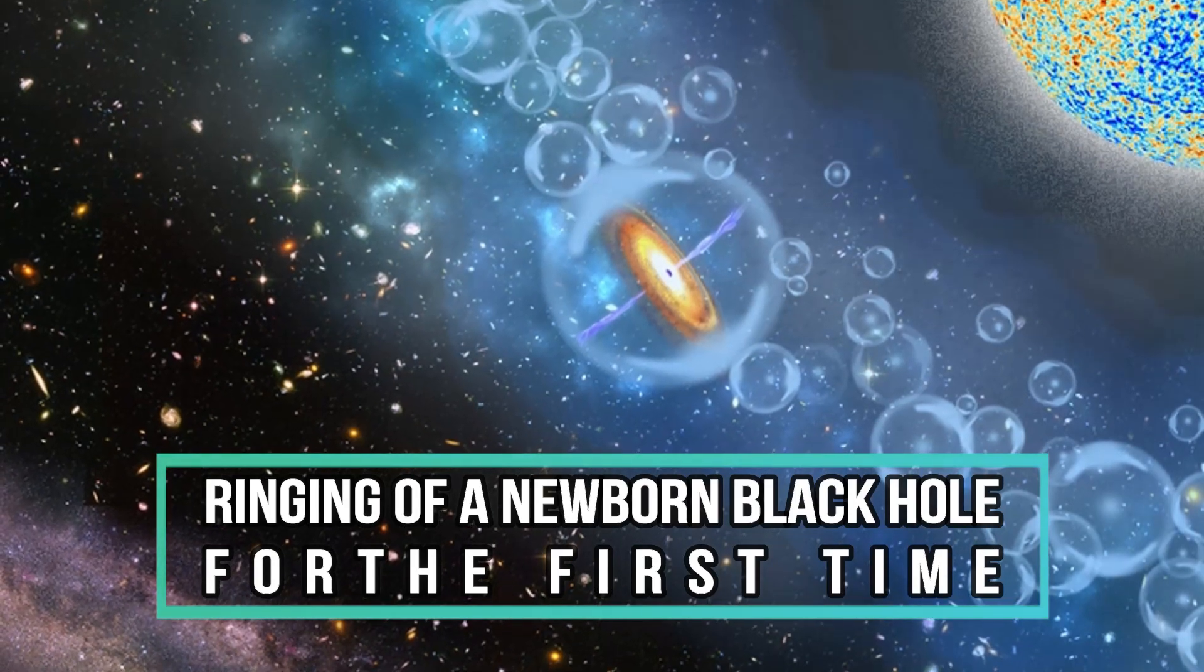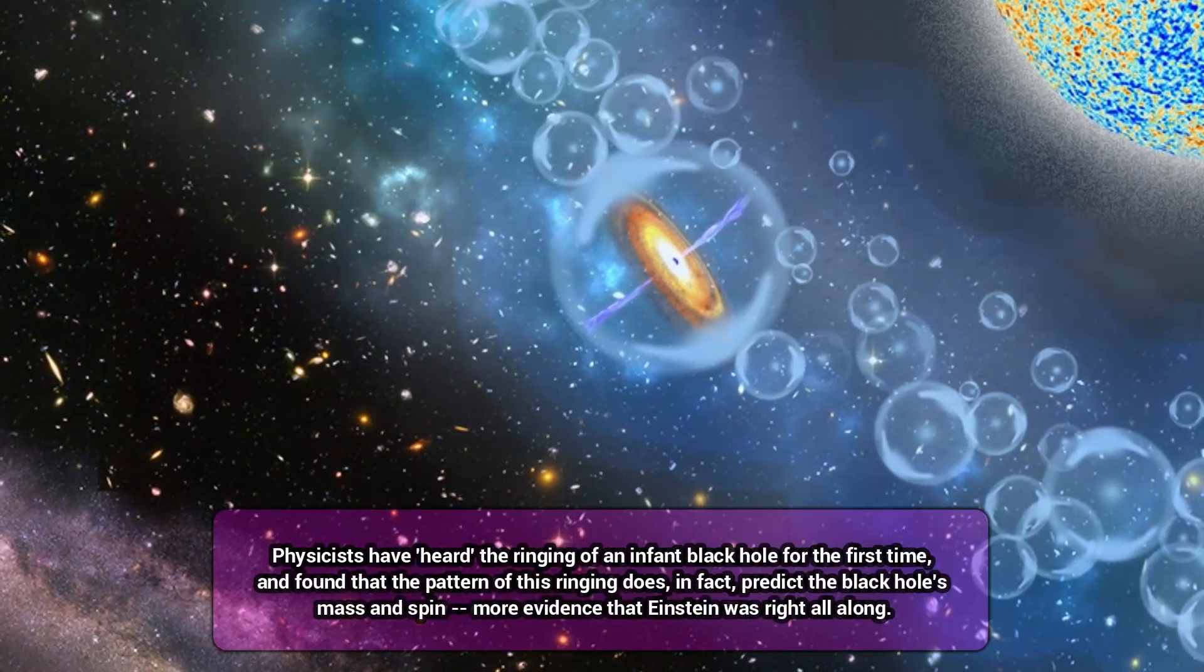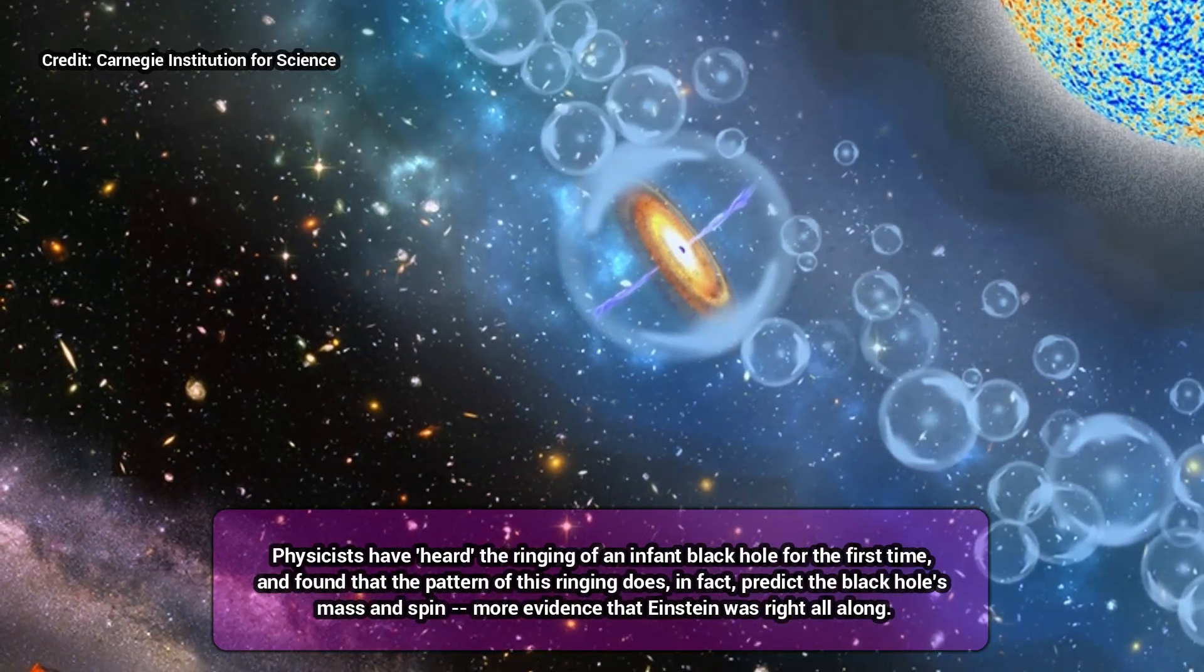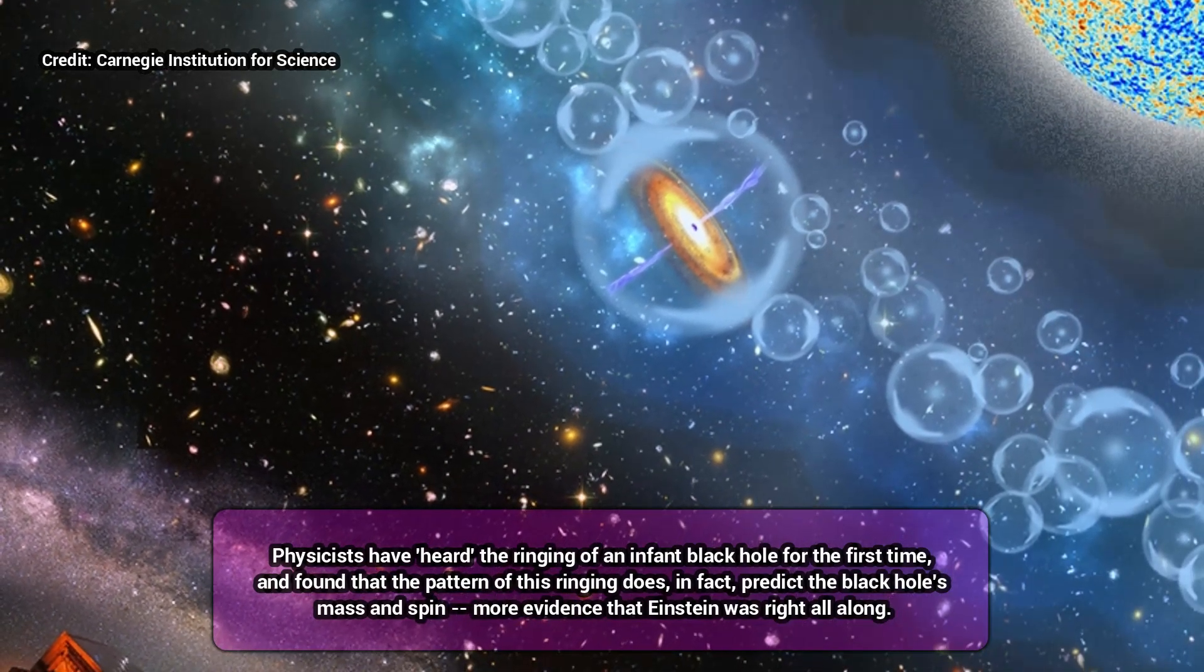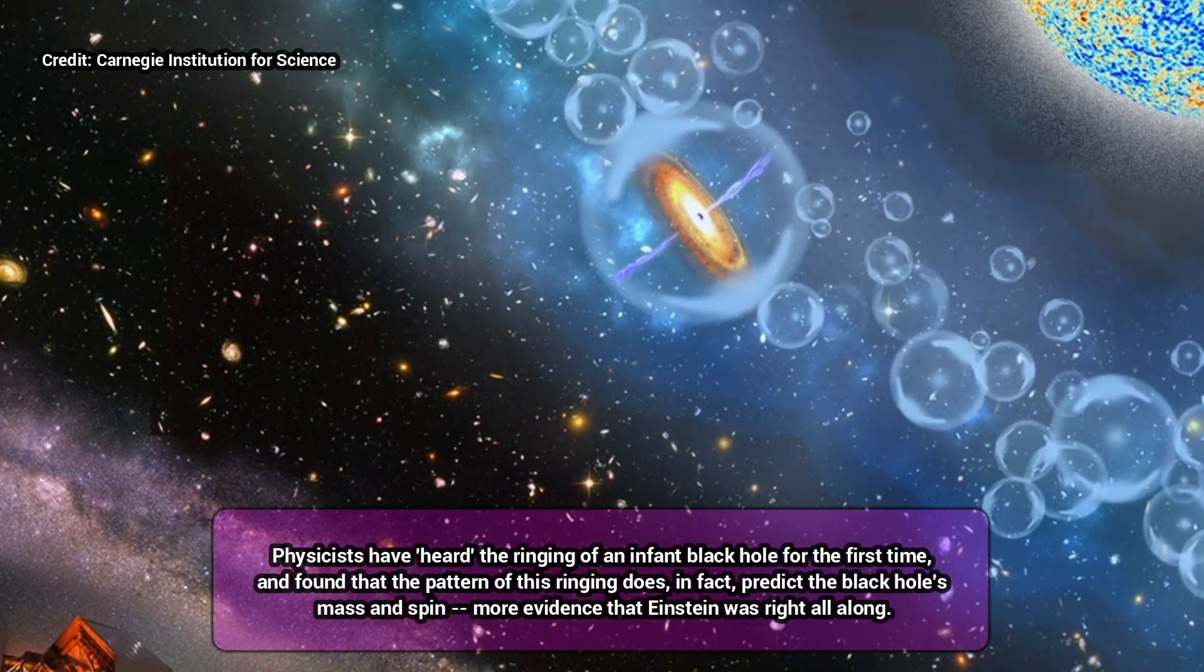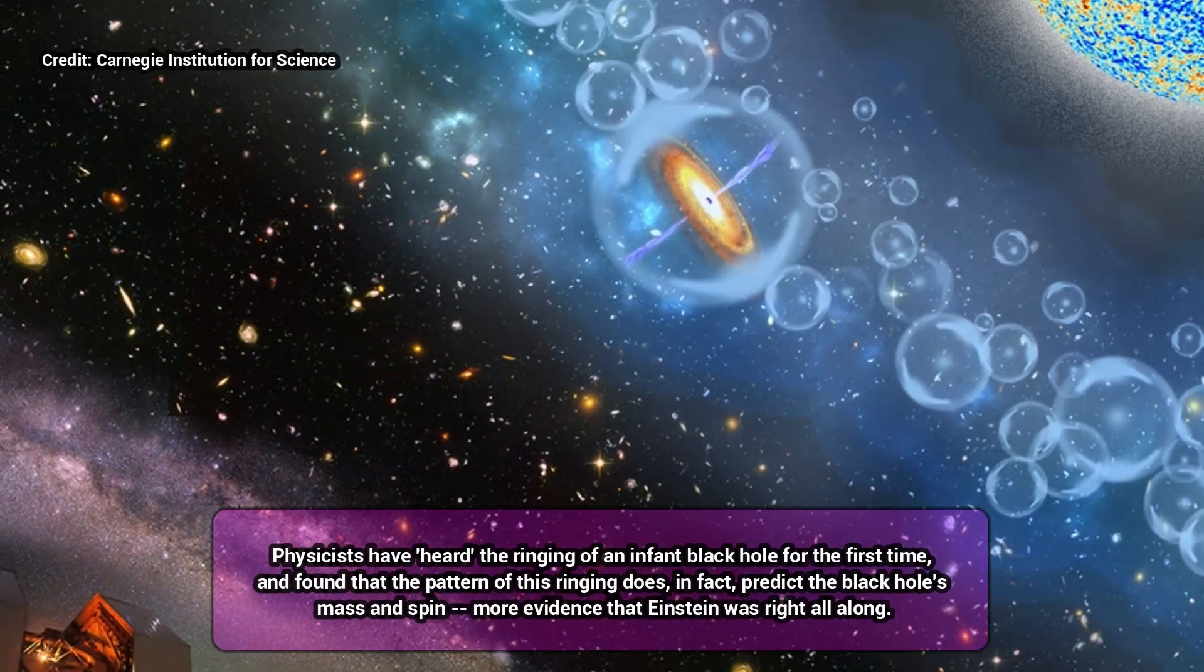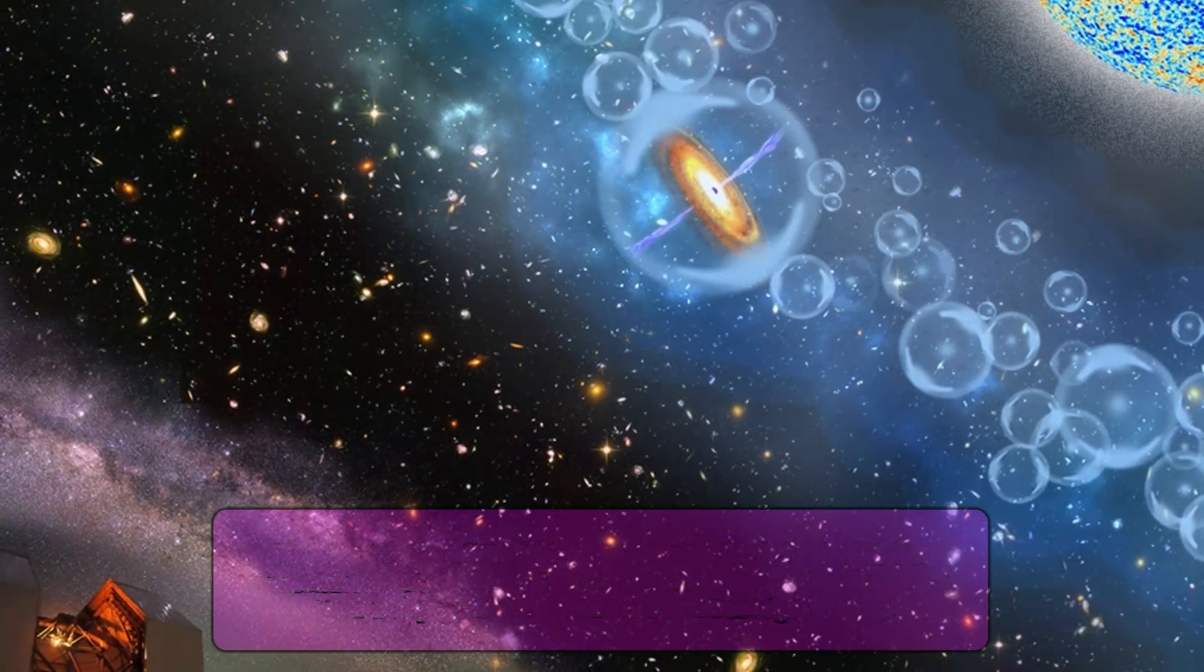Physicists have heard the ringing of an infant black hole for the first time, and found that the pattern of this ringing does, in fact, predict the black hole's mass and spin—more evidence that Einstein was right all along.